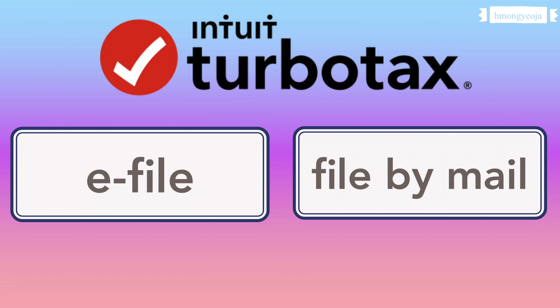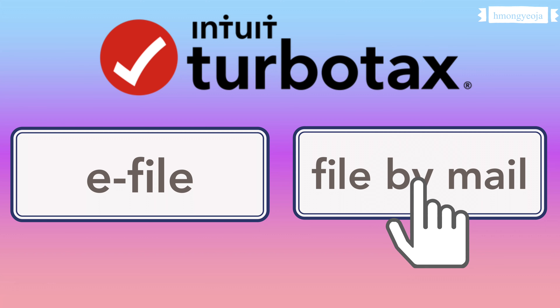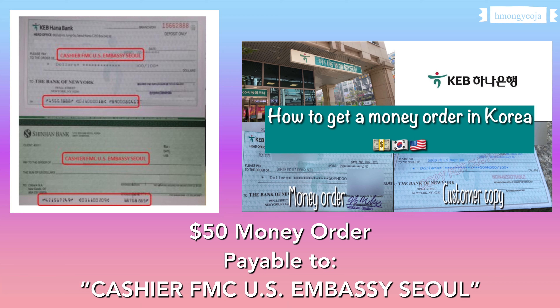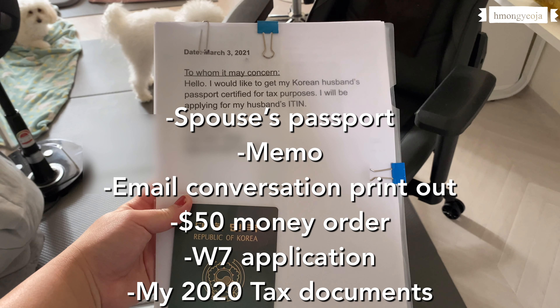On TurboTax there are two options: you can choose e-file or file by mail. Obviously we cannot e-file because we need the ITIN number first. So when you get to the end of TurboTax, just hit 'file by mail' and then print out all of those documents. You're also going to need a $50 money order — I made a separate video about how to get a money order, so I'll link it below.